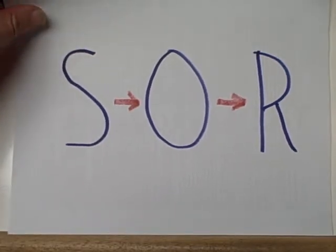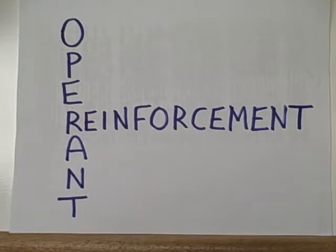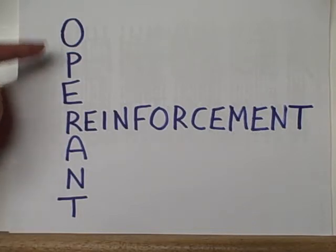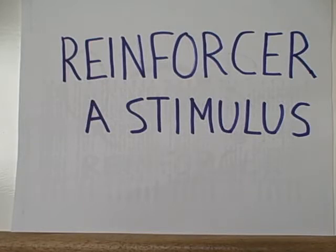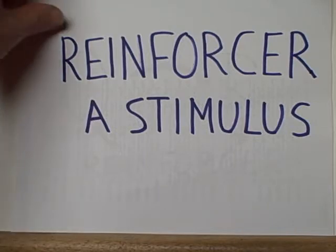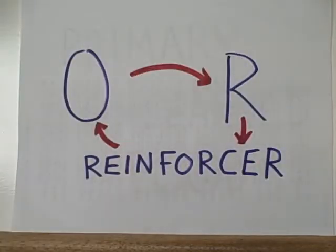Operant conditioning usually starts with an active organism emitting a response, and the role of the stimulus is a little bit different in operant conditioning compared to classical. In operant conditioning, the key feature is reinforcement. The stimulus occurs after the response, not before, and the stimulus has the role of a reinforcer of that response. It keeps the response going.